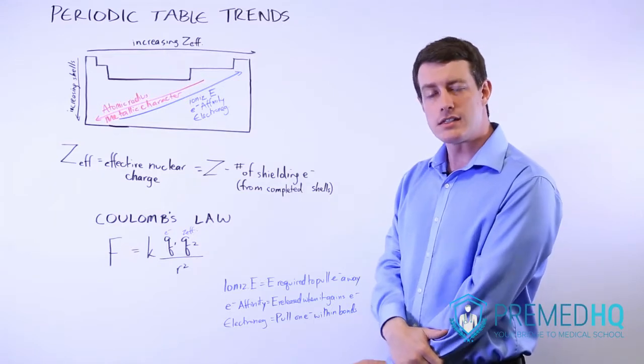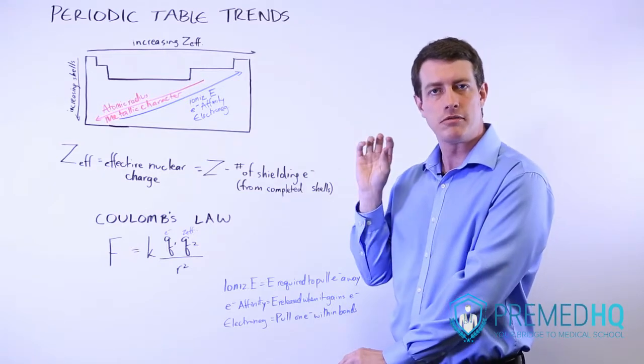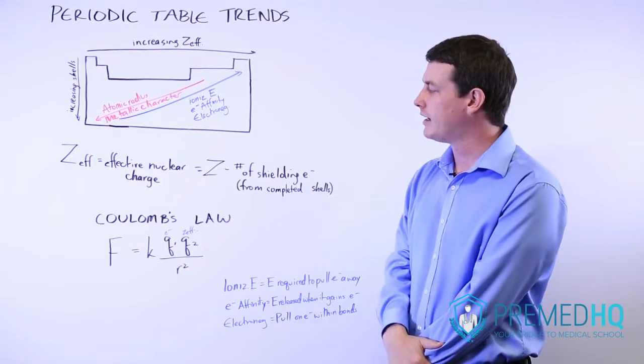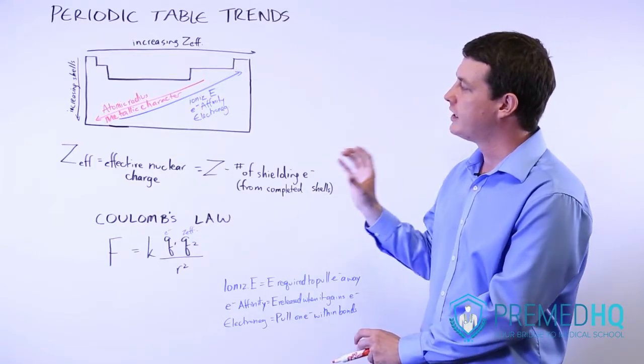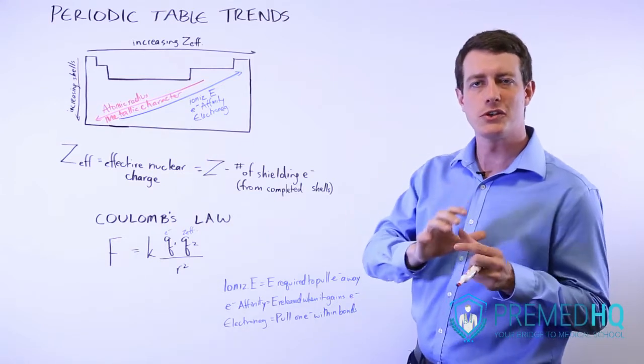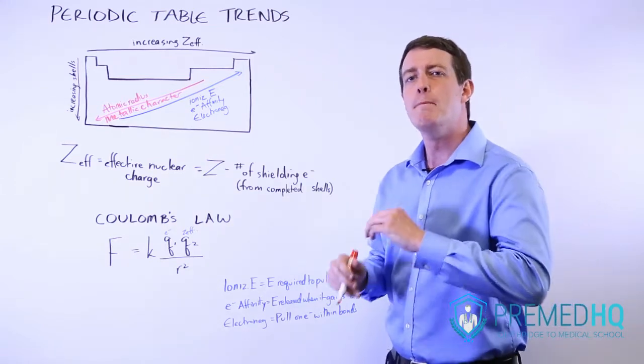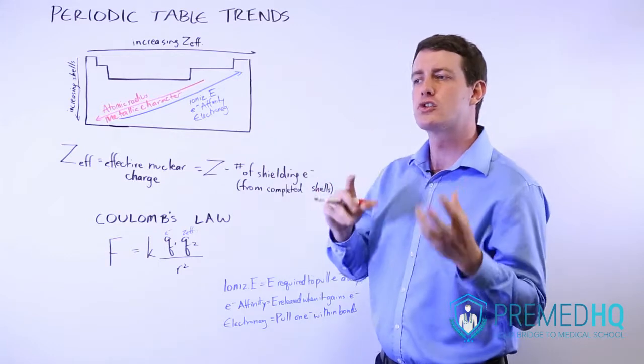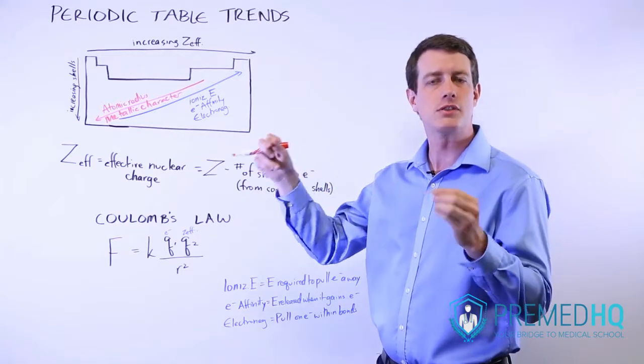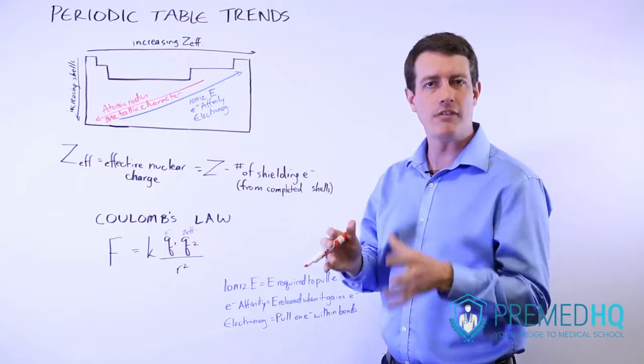Now remember that Z is the atomic number. That tells you the number of protons that exist within an atom. But the effective nuclear charge is essentially how much of the charge of those protons from the nucleus makes it out to the outer level valence electrons. How strongly are those valence electrons experiencing the pull of that nucleus?